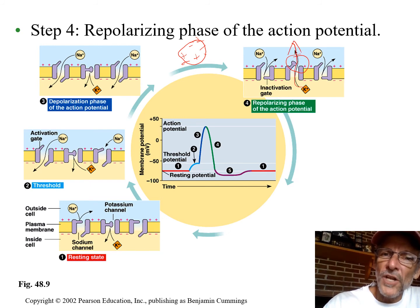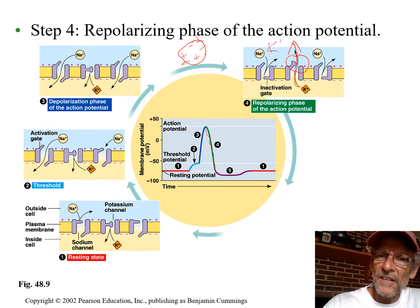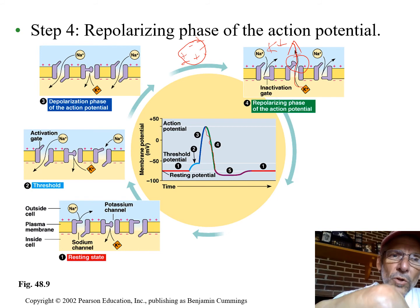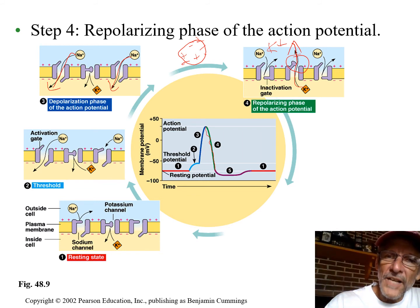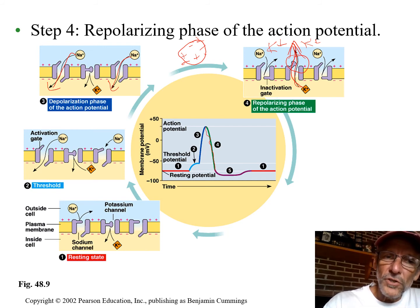When the potassium gates open, positive potassiums go outside, meaning the inside is again getting less positive — returning toward negative. The polarity was reversed. When all the sodiums came in during the spike, we reversed the sodium gradient — now there's more sodium inside than outside. When the potassiums diffuse out, we also reversed the potassium gradient — now there's more potassium outside than inside.